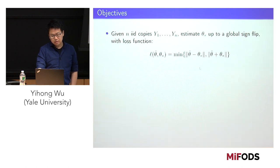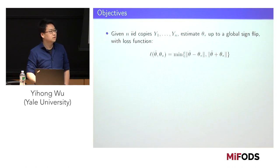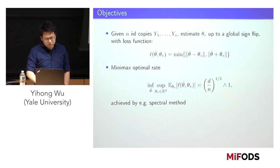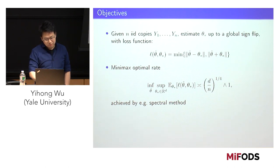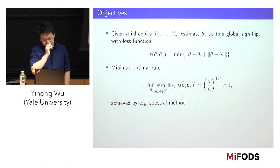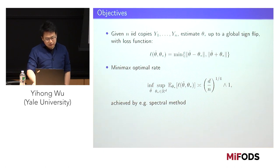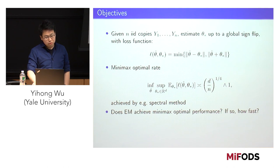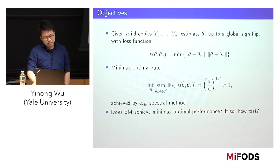The loss function measures accuracy to theta star or minus theta star, whichever is better. It's relatively easy to show the statistical limit of this model. In the sense of minimax optimality — by rates I mean within constant factors throughout the talk — the optimal rate is given by dimension over sample size to the one quarter. This can be achieved by just doing a PCA. The question I want to answer is not just to achieve the optimal rate, but to ask, essentially as a proof of concept, whether it's possible to prove EM enjoys the same optimality.